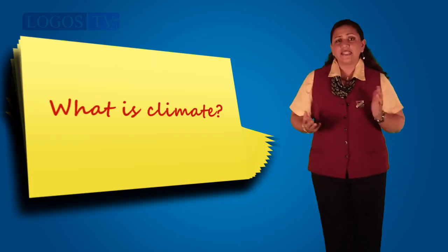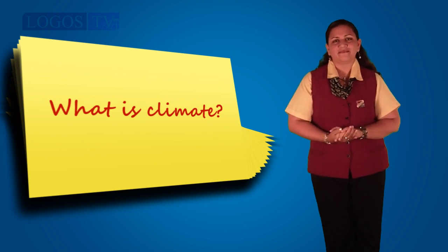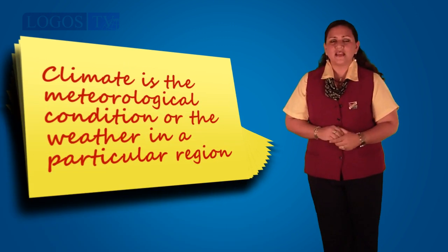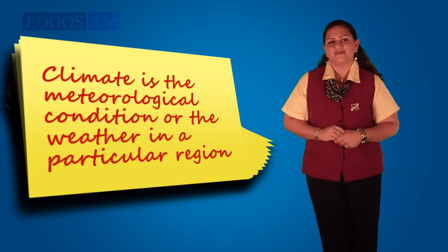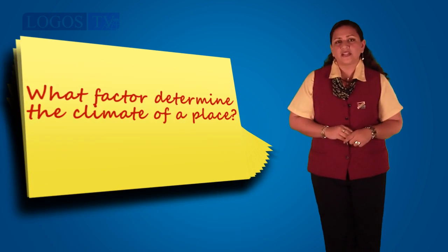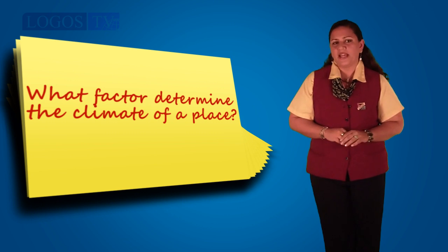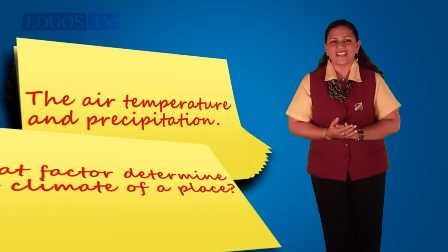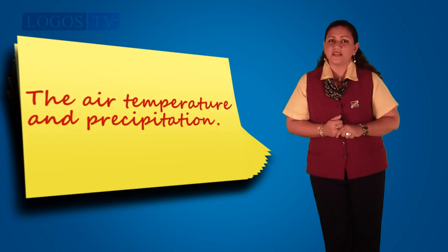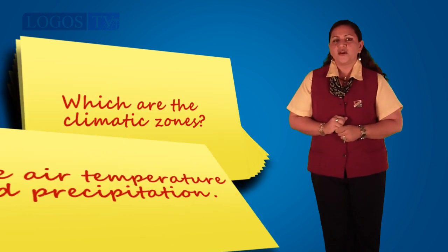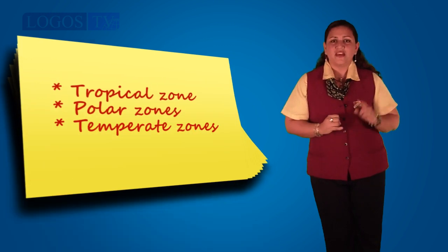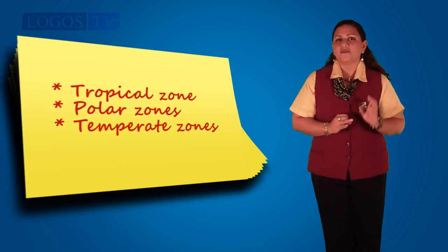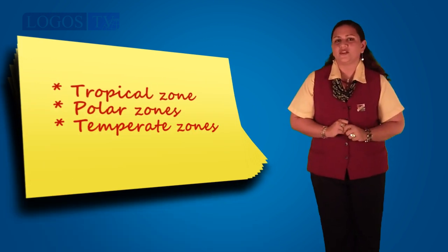Now let's see if you remember. What is climate? Climate is the meteorological conditions, or the weather, in a particular region. What factors determine the climate of a place? The air temperature and precipitation. Which are the climatic zones? They are the tropical zone, polar zones, and temperate zones.